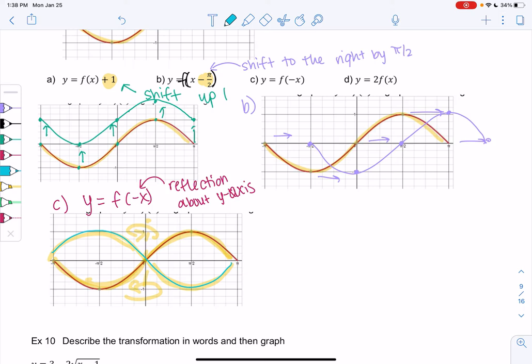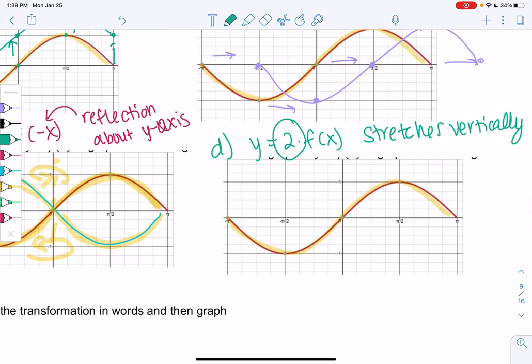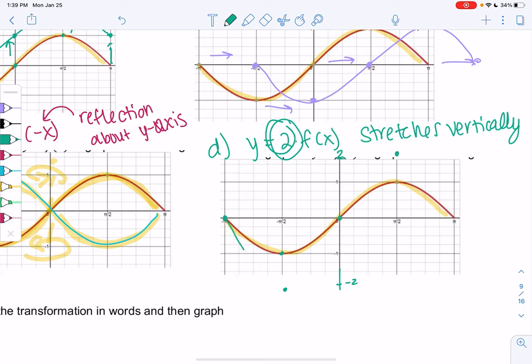And our final one for part d is y equals 2 times f(x), which we learned multiplying those coefficients, just stretch it. So the 2 just stretches it vertically. So it's basically just going to be taller. So 0 stays 0, right? Because 0 times 2 is still 0. But the other points are going to get stretched. So when we go down to negative 1, now instead we'll go down to negative 2, because it's being stretched by 2. And then rather than going to 1, we'll go up to 2. So we'll just get taller. So it'll just be a stretched version of the curve. Cool. And that's example 9.